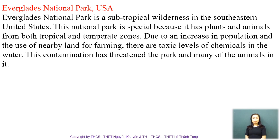Now, the last one — Everglades National Park, USA. Everglades National Park is a subtropical wilderness in the southeastern United States. This national park is special because it has plants and animals from both tropical and temperate zones. Due to an increase in population and the use of nearby land for farming, there are toxic levels of chemicals in the water. This contamination has threatened the park and many of the animals in it.